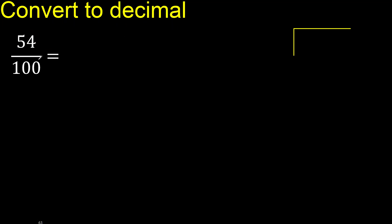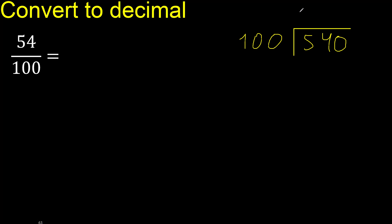54 divided by 100. 54 is less, therefore complete — always complete with 0. Place the decimal point here.